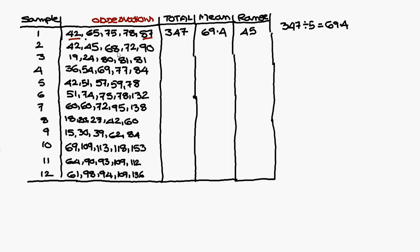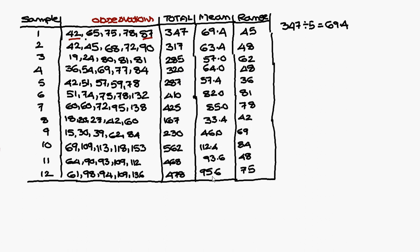Similarly, for the second sample, find the Mean and Range. Mean is 63.4 and Range is 48. For the third sample, Mean is 57 and Range is 62. We have to find these values for all remaining samples in the same way.